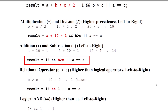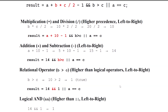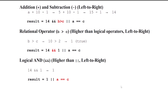The intermediate result so far is 14. The remaining expression includes relational operator greater than. Evaluating B > C: 10 > 2 is true, which returns 1. The expression is now: result = 14 && 1 || A == C.